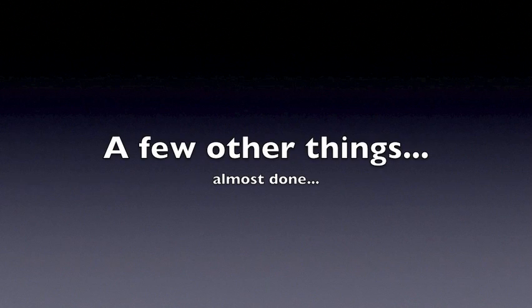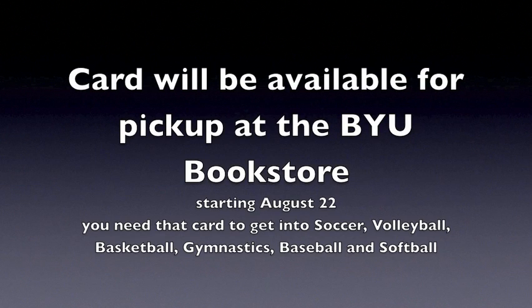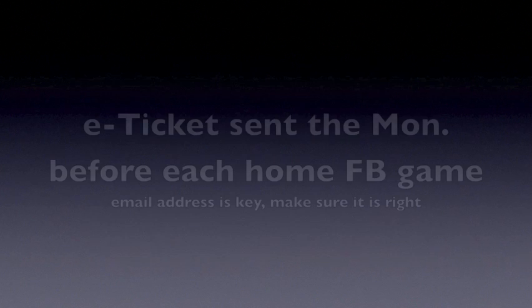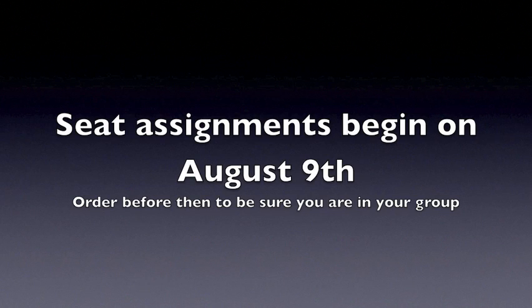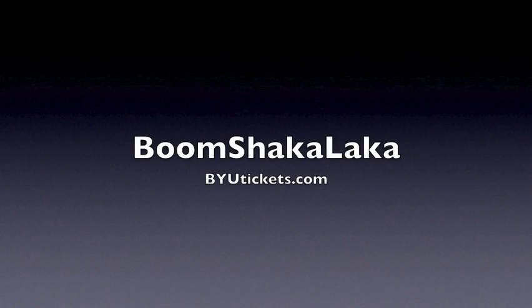A few other things — we're almost done. The all-sport card will be available for pickup starting August 22nd at the BYU bookstore. You need that card to get into basketball, soccer, volleyball, gymnastics, baseball, and softball. Your e-ticket for football will be sent to you the Monday before each home football game, so make sure you give us the right email address. Seat assignments will begin on August 9th, so order before then to be sure you are in the group that you want. Cannot wait for this season — looking forward to having you with us. Go to BYUtickets.com, get that all-sport pass ordered, get with your friends. This is going to be a great year. Boom.